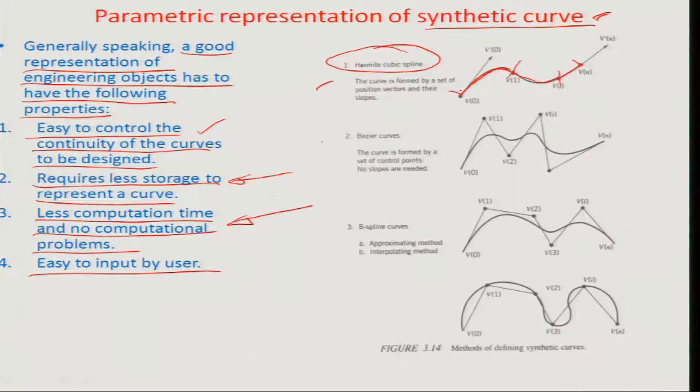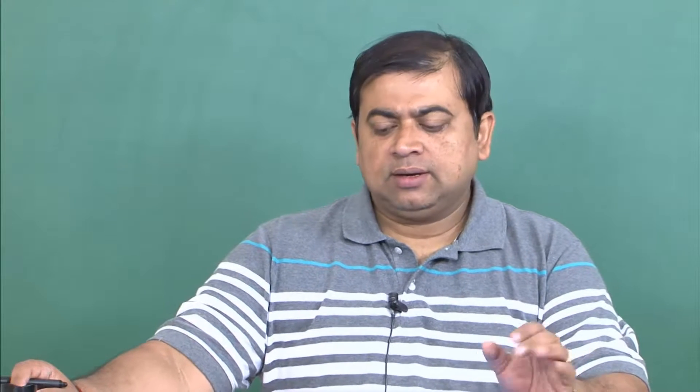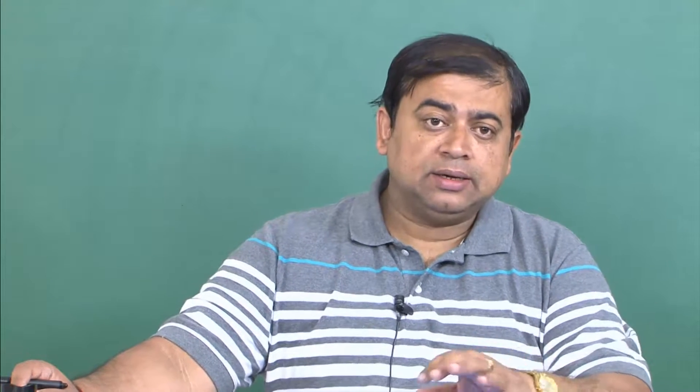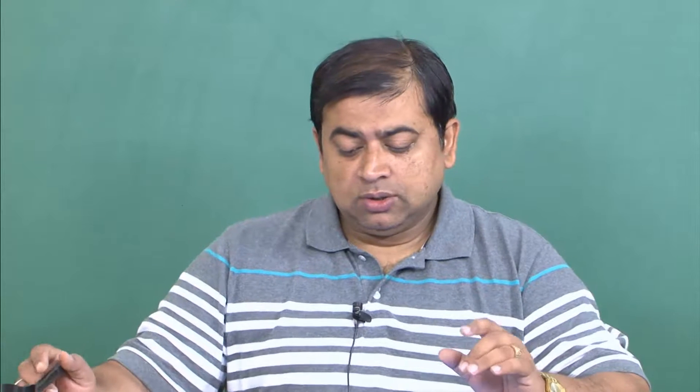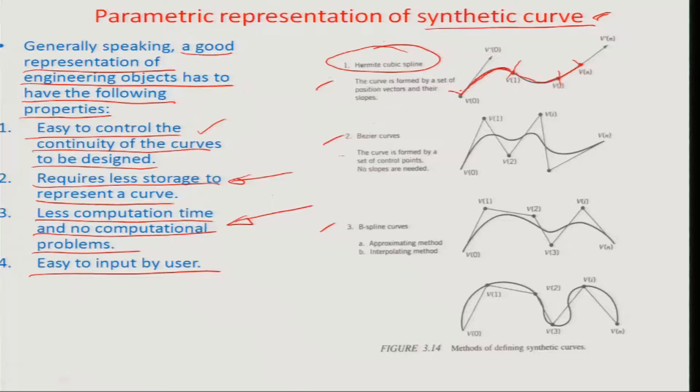There are at least three different kinds of formulations which are there and essentially it boils down to fitting of local sections of the whole complex topology for governing the whole nature or array of such curves which are representing the complete surface or complete topology. They are Hermit cubic spline, Bezier curves and B spline curves. Briefly, the Hermit cubic spline fit is a family of curves which is formed by a set of position vectors and their slopes. At least the end position vectors and the end slopes are important for varying the topology along this particular domain of the curve.